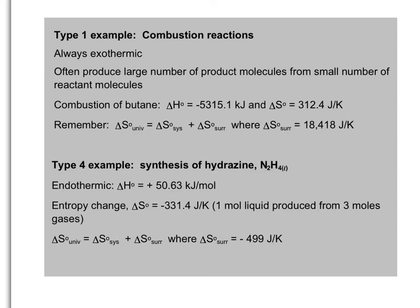Type 4: the synthesis of hydrazine, N₂H₄. It's endothermic with ΔH = +50.63 kJ/mol. The entropy change is negative at −331.4 J/K, because you're producing one mole of liquid hydrazine from three moles of gases (nitrogen and hydrogen). The change in entropy of the universe is −499 J/K — not spontaneous, because ΔS_universe is negative.